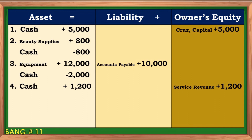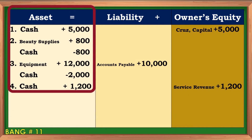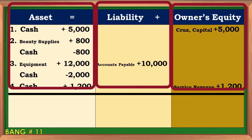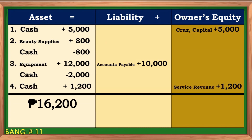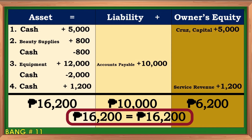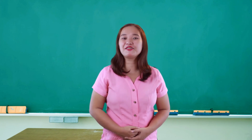To summarize the answers, let us compute for the total asset, total liability, and total owner's equity. We have 16,200 pesos for asset, 10,000 pesos for liability, and 6,200 pesos for owner's equity. Thus, we have a balanced amount of 16,200 pesos. Did you get all the correct answers? I'm sure you did. Perfect. Congratulations.